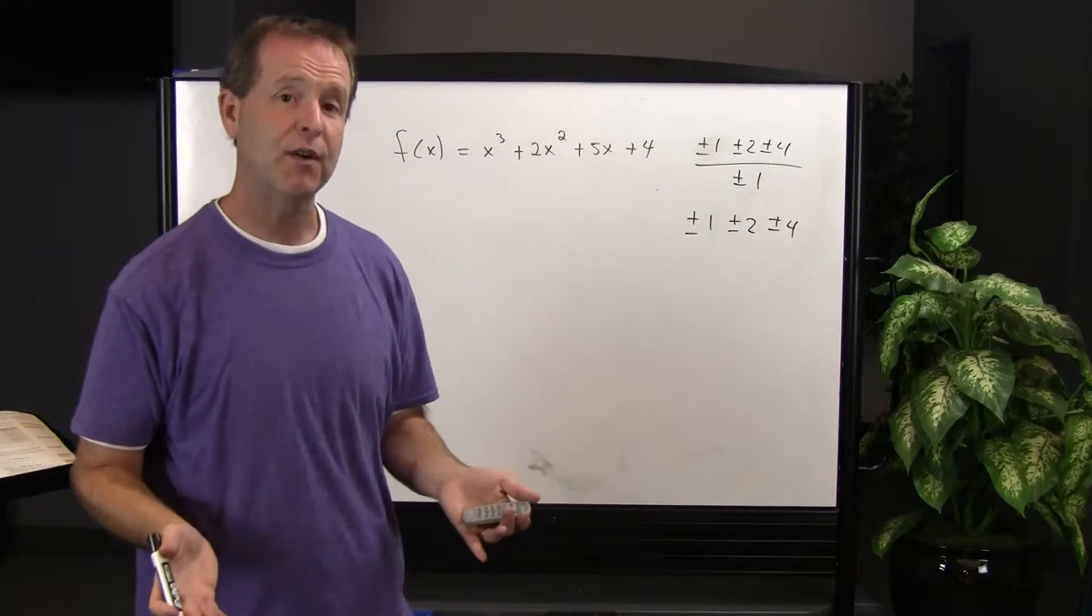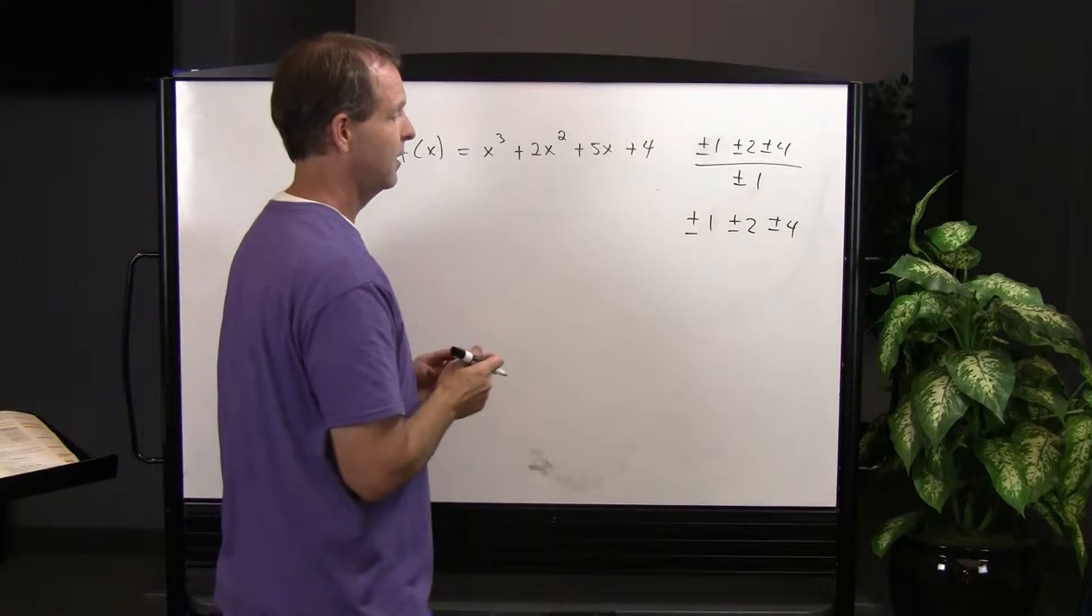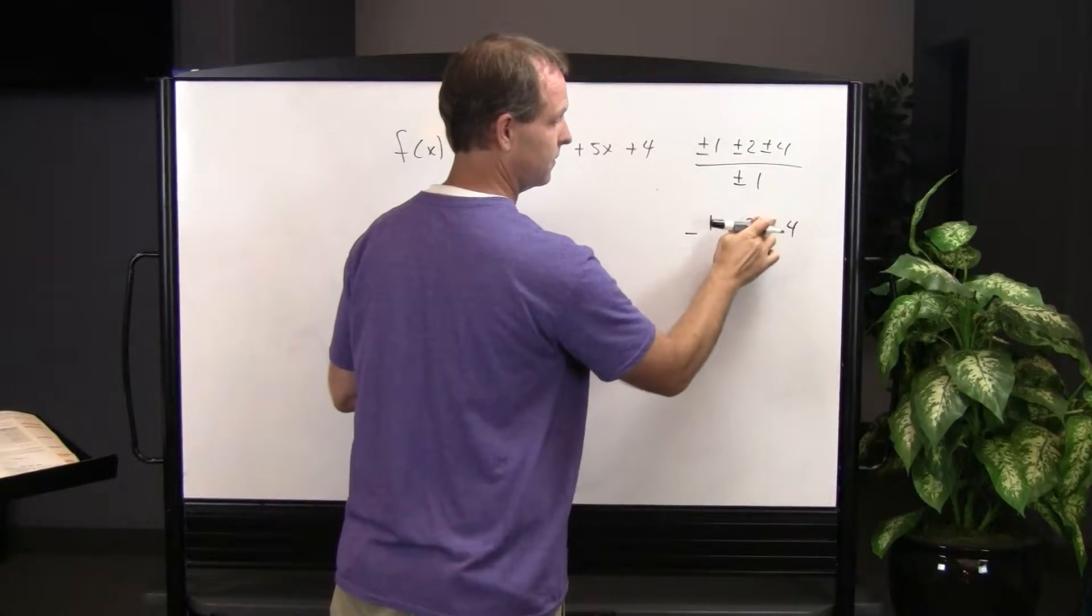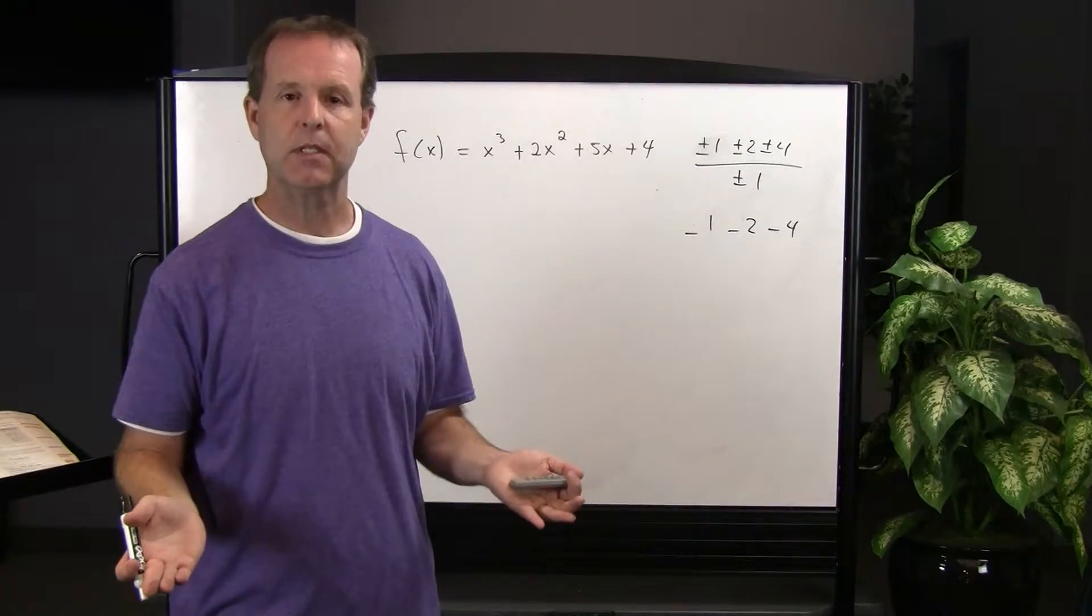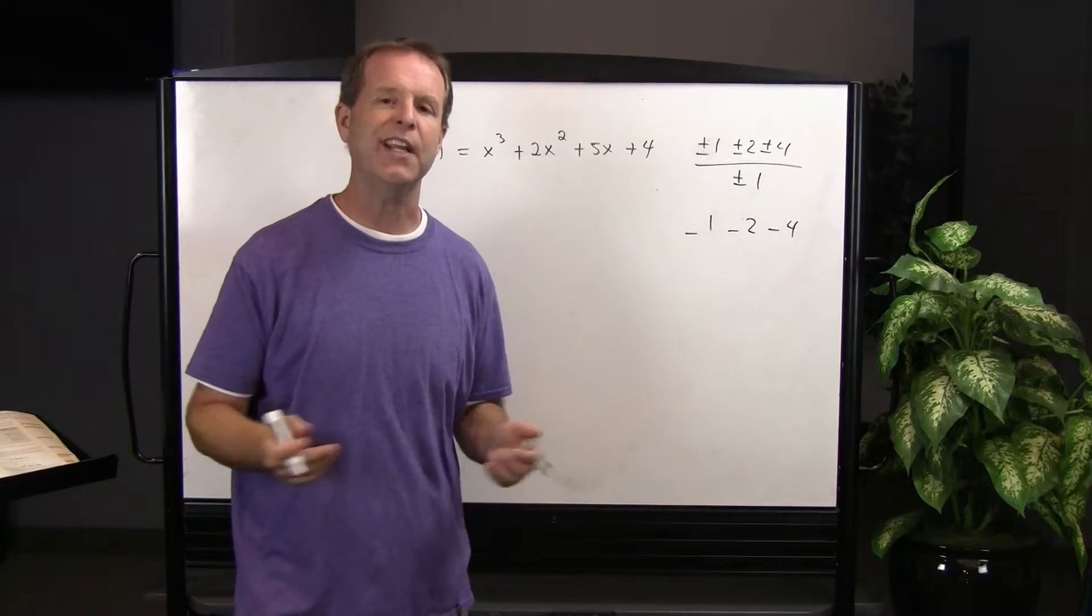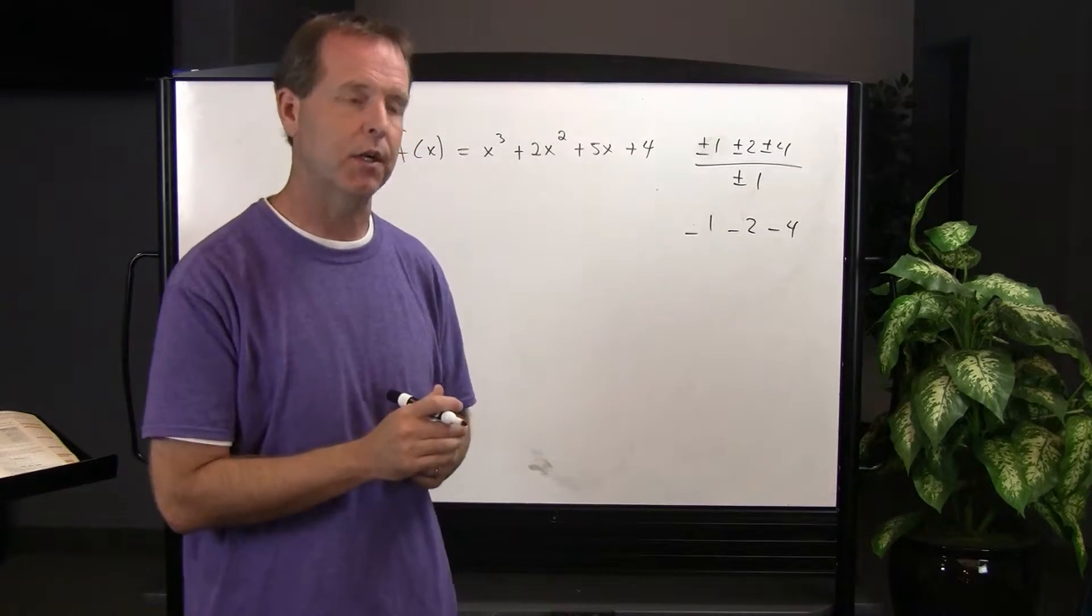Since we discovered quickly by Descartes that there are no positive real zeroes, we can eliminate half of these numbers. I know there's only 6 numbers and we eliminated half, so we only eliminated 3, but sometimes there might be 20 or 24 numbers and eliminating half, that's quite a bit and it reduces our search.